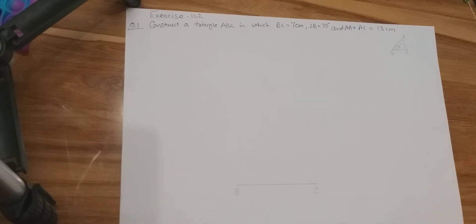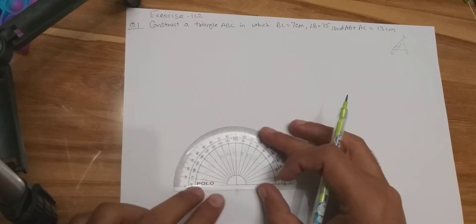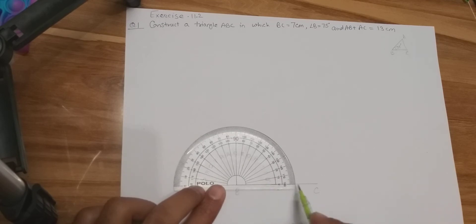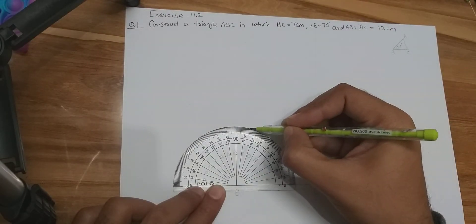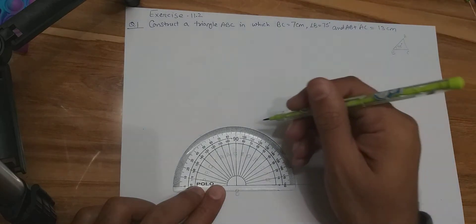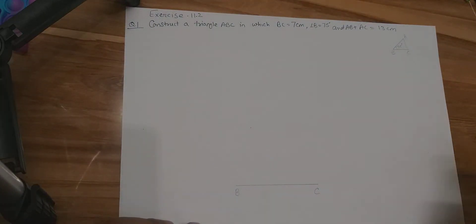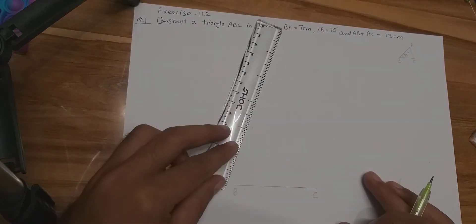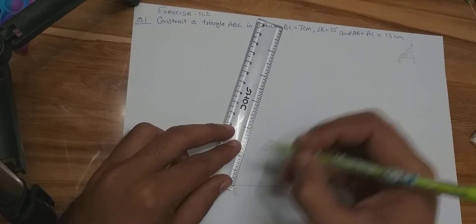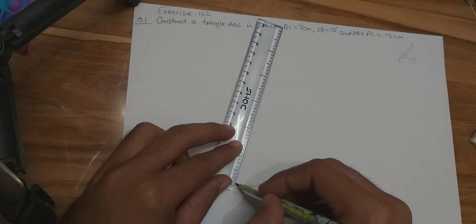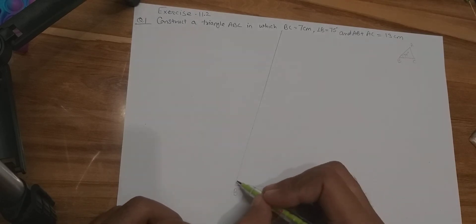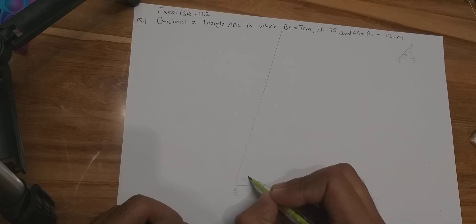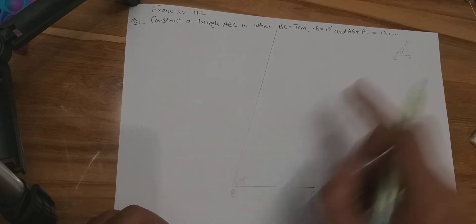Now at B we have to draw an angle of 75 degrees, so we'll use our protractor. We place the protractor here — this ray is making an angle of 0 degrees. At 75 degrees we mark the point, and this point represents an angle of 75 degrees. We join this point with B, giving us an angle of 75 degrees at point B.